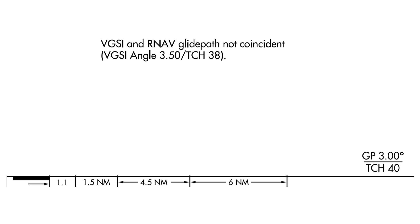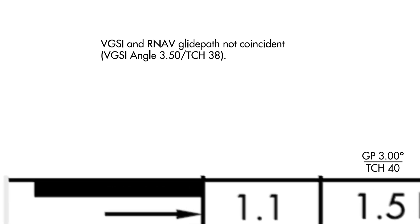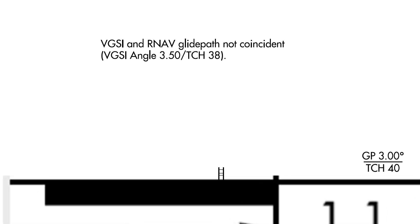Over on the right, the RNAV glide path information is noted. The glide path for that is a standard three degrees, and it crosses the threshold at 40 feet. So there are two parameters — the angle and the threshold crossing height — that determine what the glide path will be from the VASI or from the RNAV. On a precision approach like an ILS, a glide slope antenna is situated to the side of the runway, usually at the aiming point.